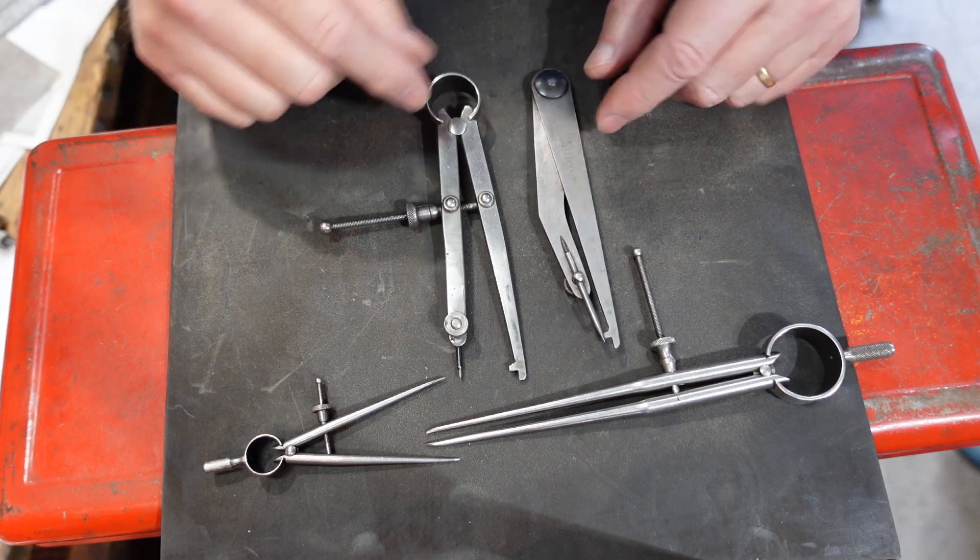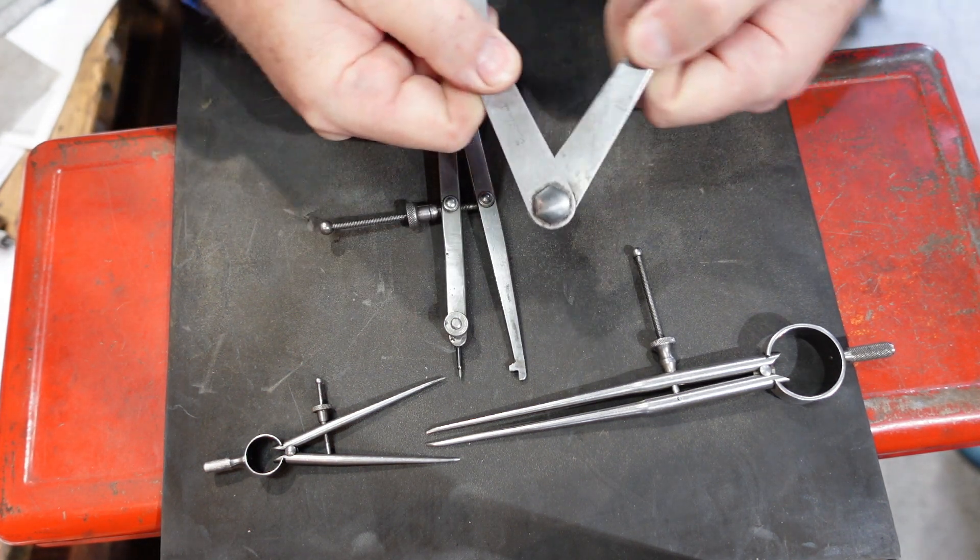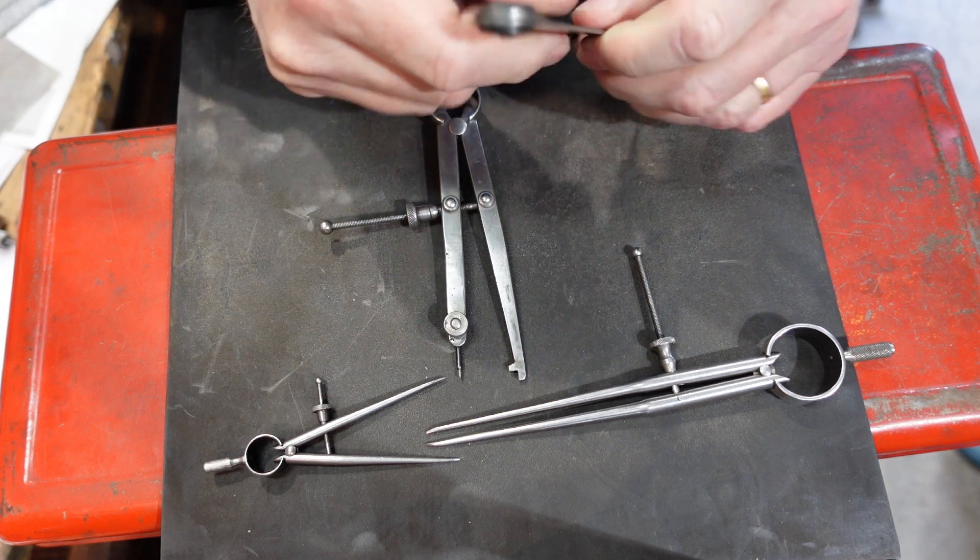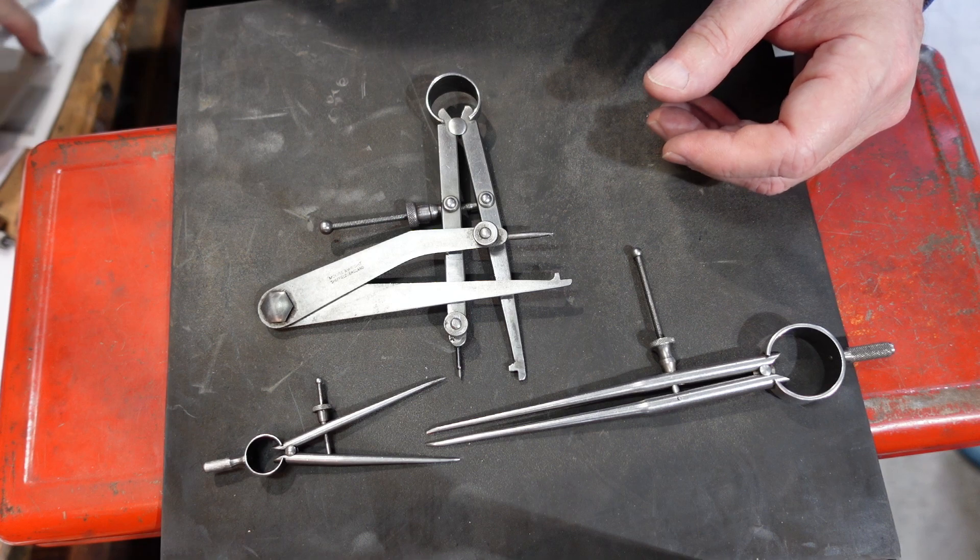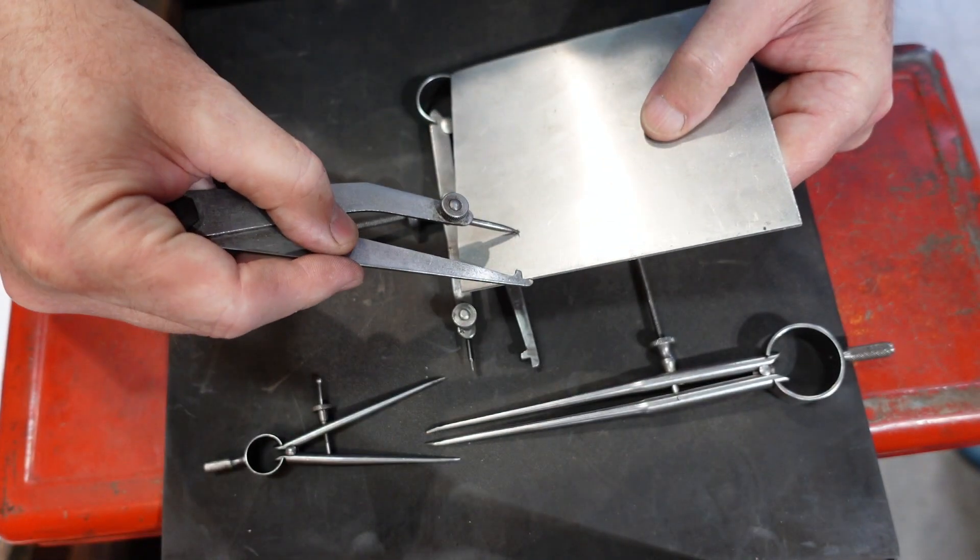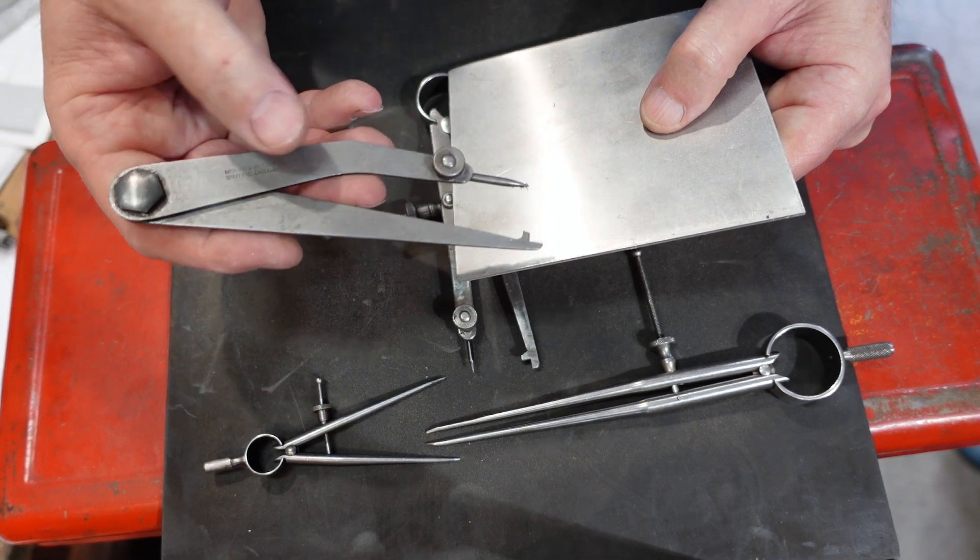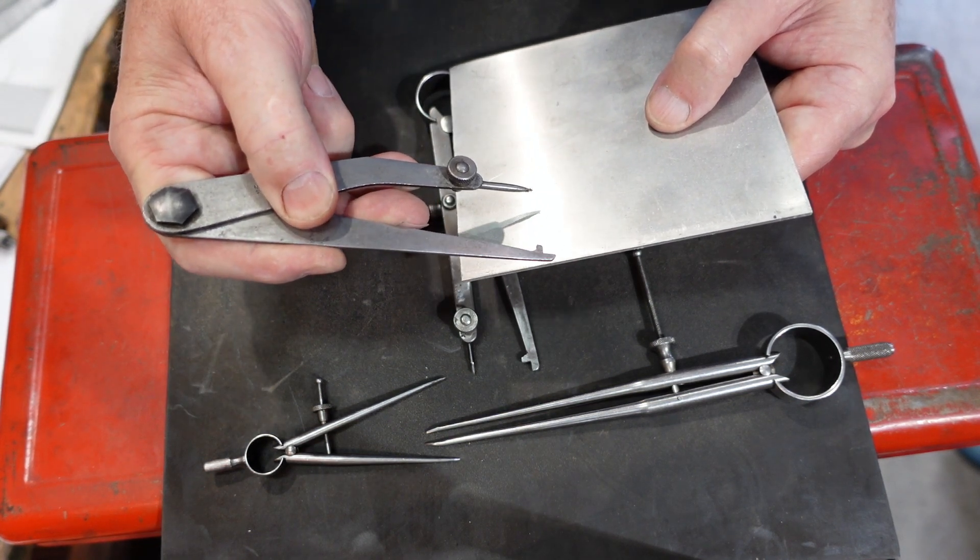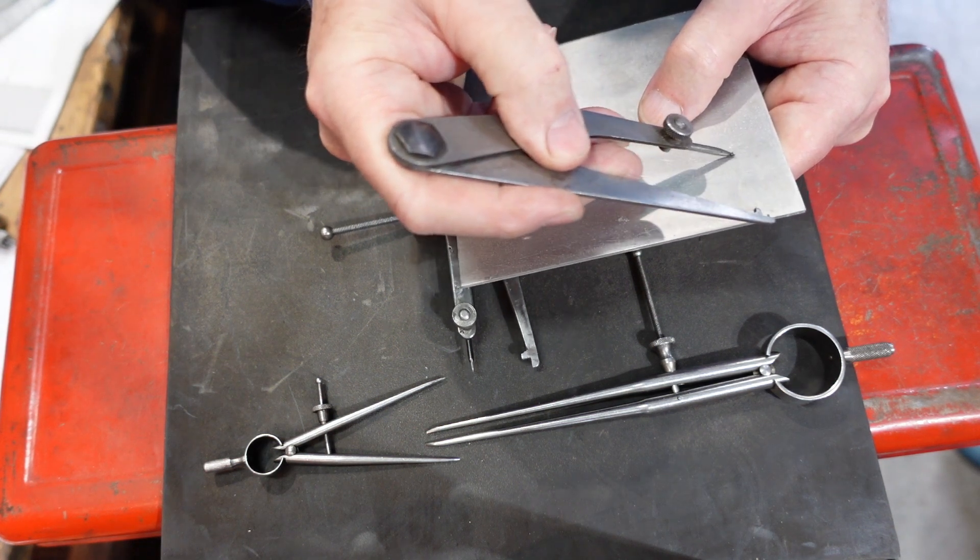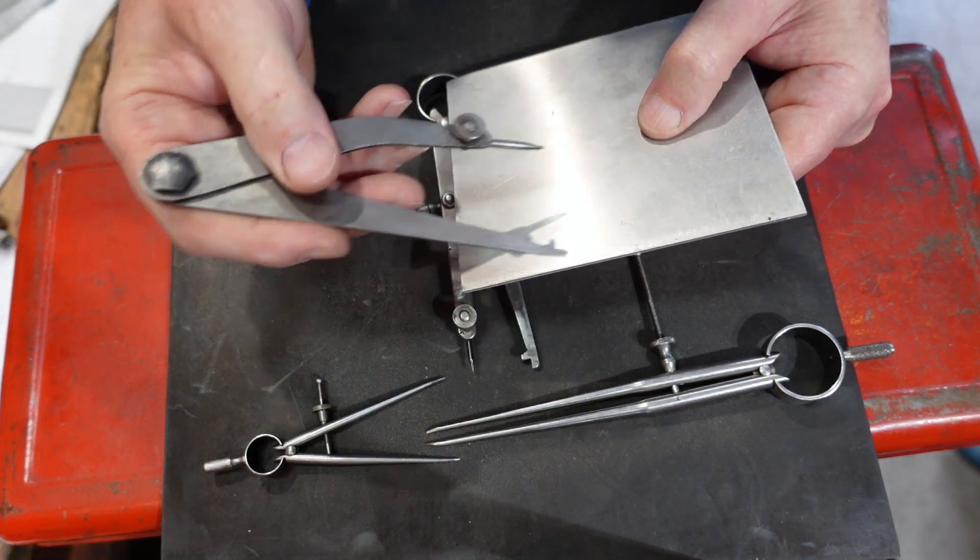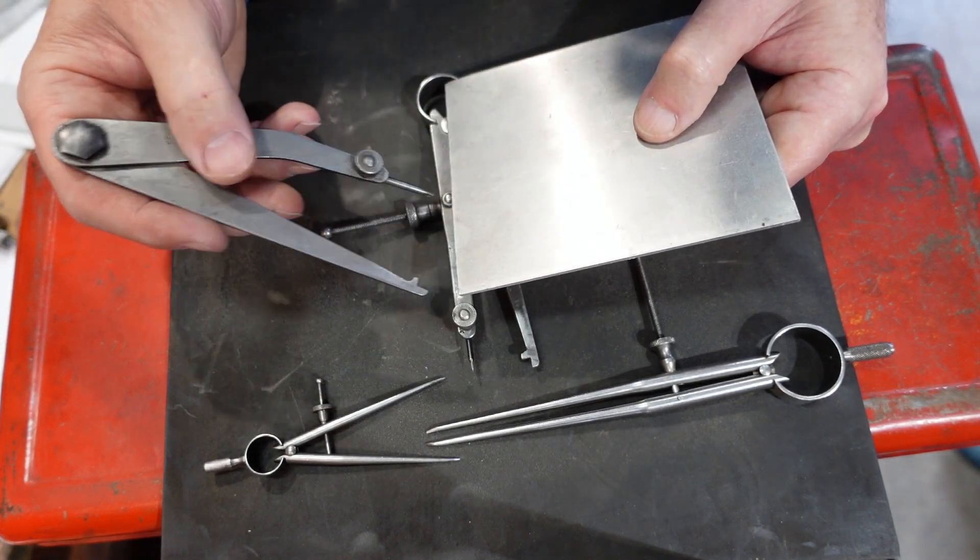Then you've got these ones, these are odd leg calipers. This is what's called a friction joint and as the name suggests the joint relies entirely on friction. These aren't too bad for running along the edge of something which is what you use them for. However what I've found is that if you're not careful, if you twist these a bit they can tend to open out so the line might be slanted.